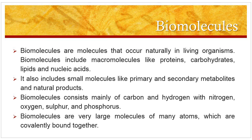Biomolecules also include small molecules like primary and secondary metabolites and natural products. So what are metabolites? Metabolites are the compounds which are produced in or required for metabolism. All metabolites are biomolecules. These metabolites are the micromolecules which are involved in many cellular functions. Metabolites are divided into two types based on their role in cellular activities. A metabolite which is directly involved in the physiological function and helps in growth, reproduction and maturity is called a primary metabolite.